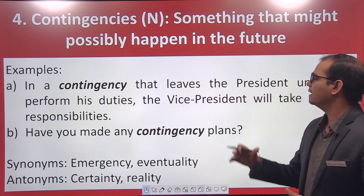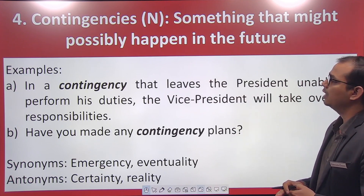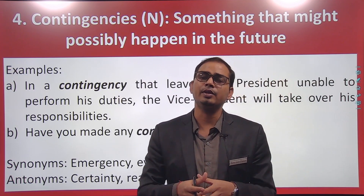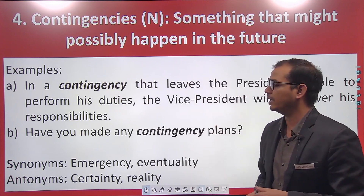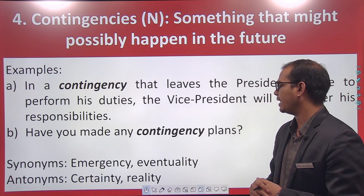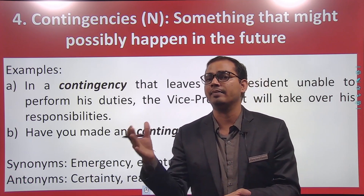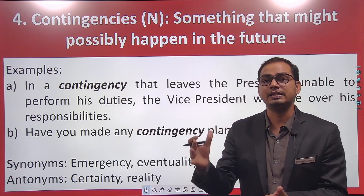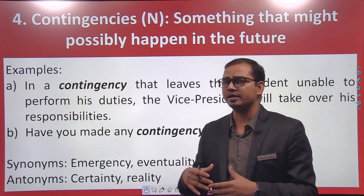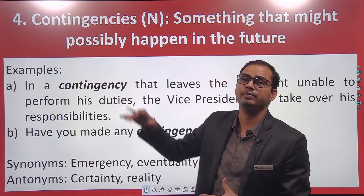For example, in a contingency that leaves the president unable to perform his duties, the vice president will take over his responsibilities. So if the president is in such a situation that he cannot work, the vice president steps in. Another example: have you made any contingency plan? You plan accordingly and should have a Plan B — that Plan B is a contingency plan. Synonyms are 'emergency' and 'eventuality'; emergency and contingency are similar words.